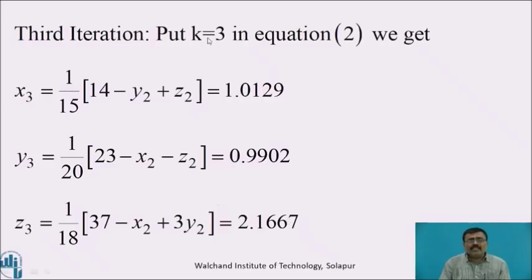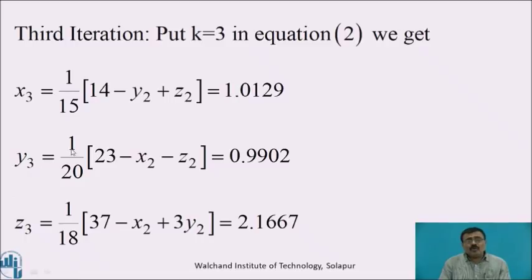Third iteration: put k = 3 in equation 2: x3 = 1/15 × (14 − y2 + z2) = 1.0129; y3 = 1/20 × (23 − x2 − z2) = 0.9902; z3 = 1/18 × (37 − x2 + 3·y2) = 2.1667.